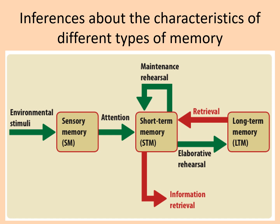For example, if I asked you what the duration of short-term memory is, hopefully you'd tell me it's 0 to 30 seconds, peaking at 18. We know that because researchers Peterson and Peterson did the trigram experiment: participants were told a trigram — three letters — then asked to count backwards in threes from a number until told to stop, then recall the trigram. They found that if the interval was only three seconds, most people could recall the trigram, but once it got to 18 seconds, only 2% could recall it. From that experiment, we can deduce and infer that the duration of short-term memory is 0 to 30 seconds.